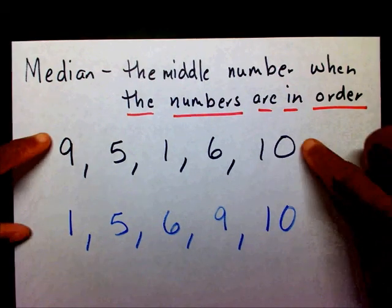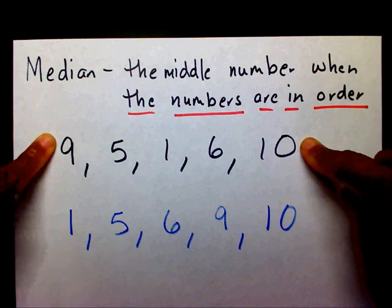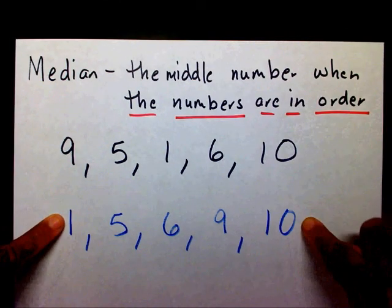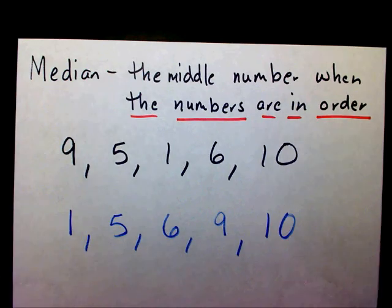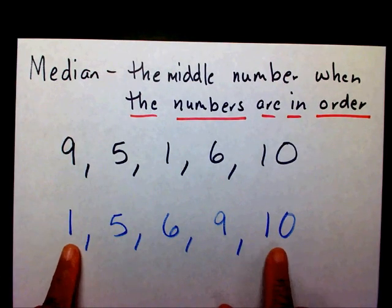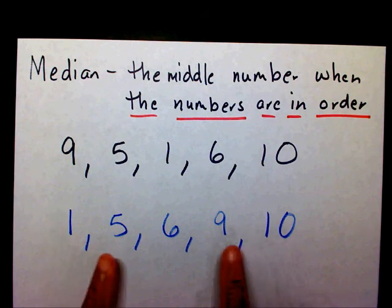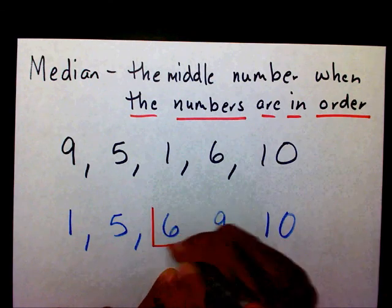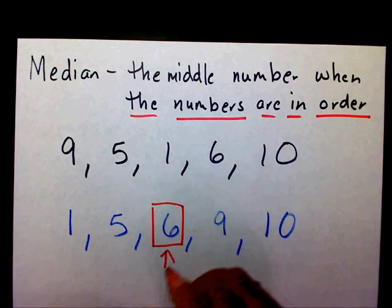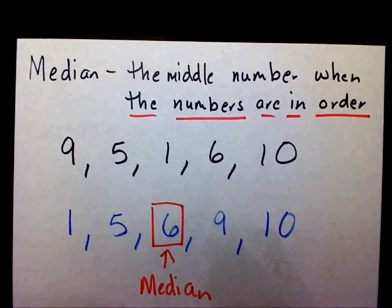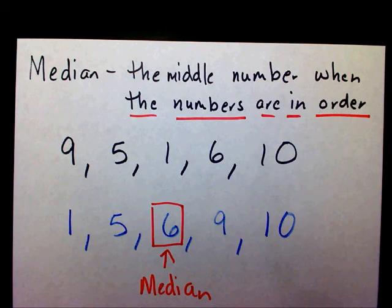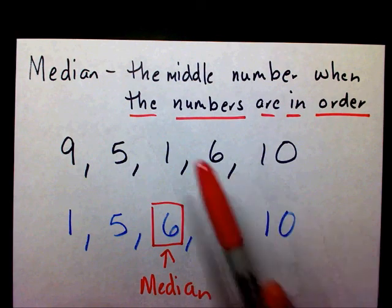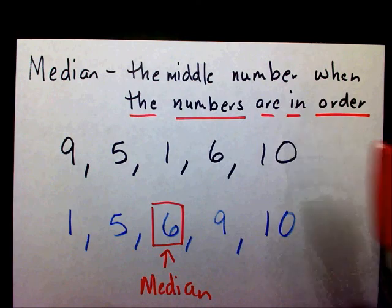Now I have my numbers in order. Now I can find the middle number. My outside numbers are 1 and 10. I go in one from each side, and the number right there is my median. The most important thing to remember is that the numbers have to be in order.